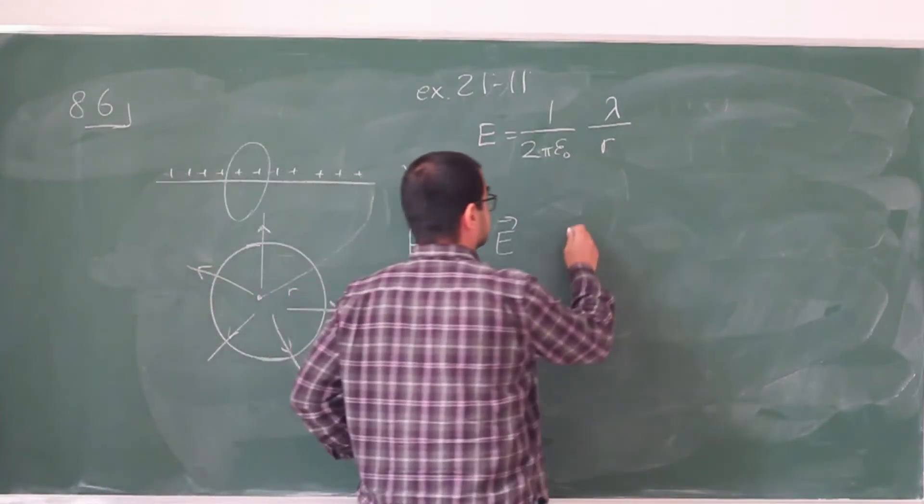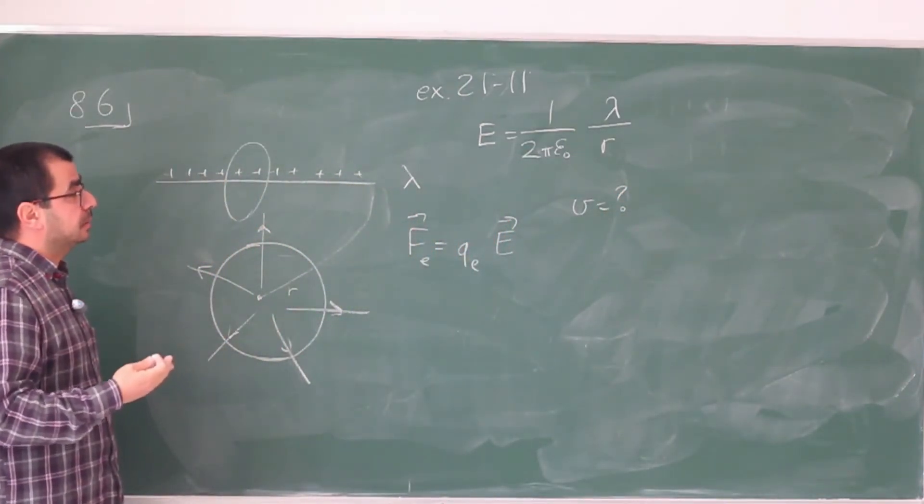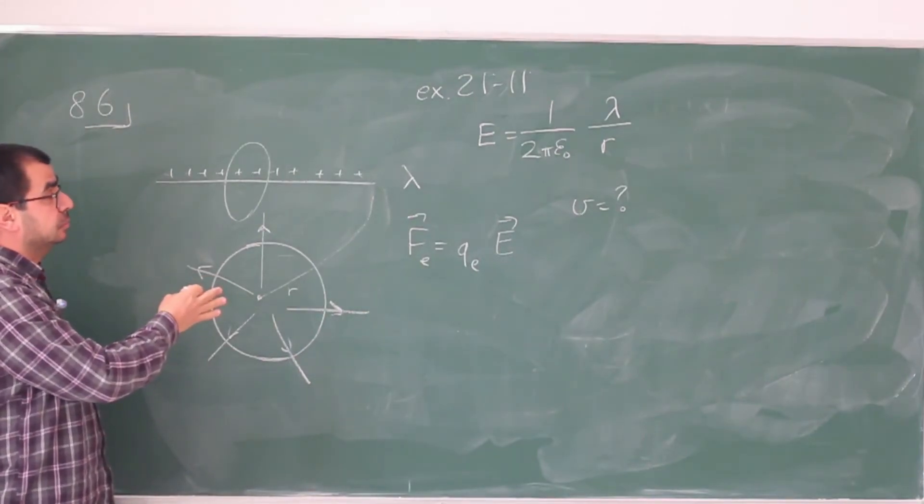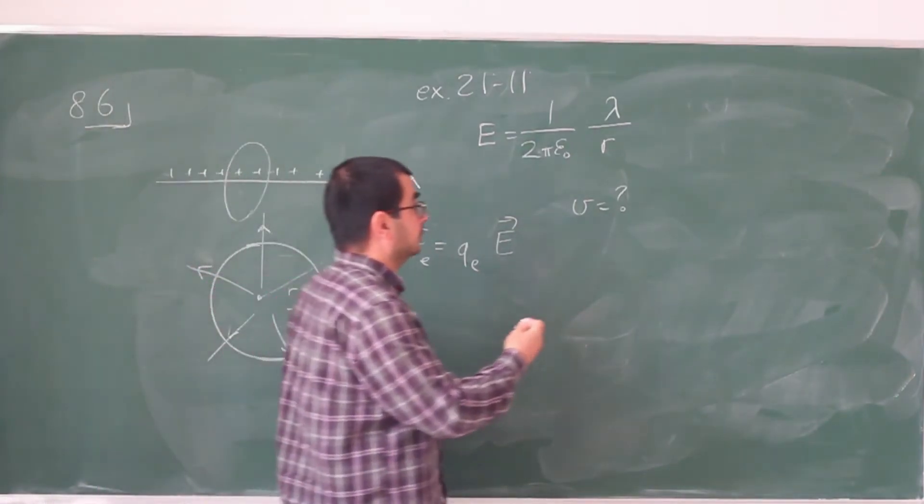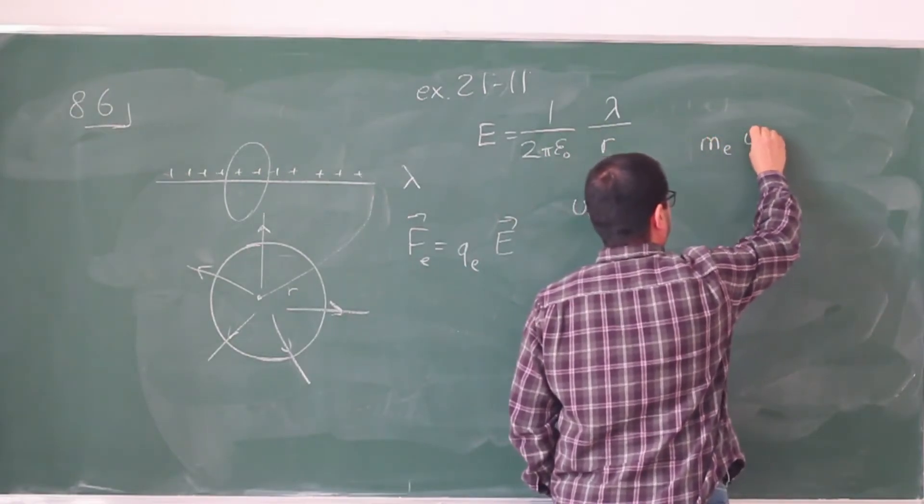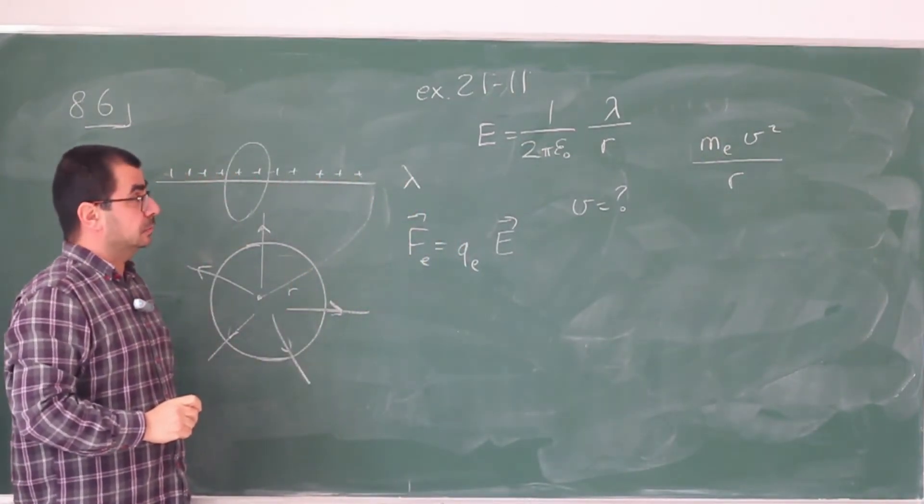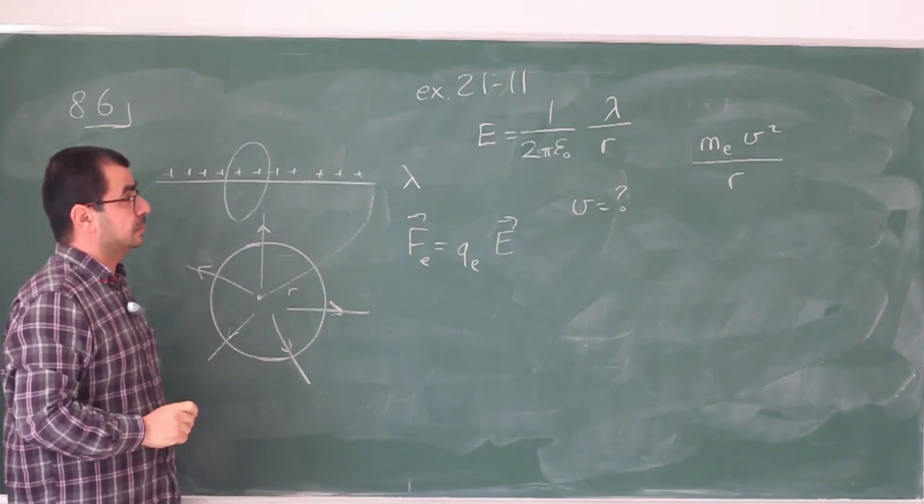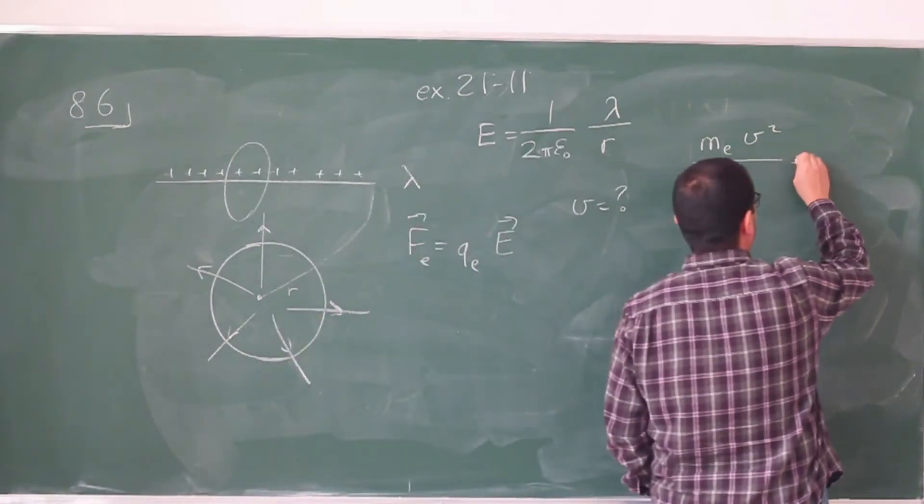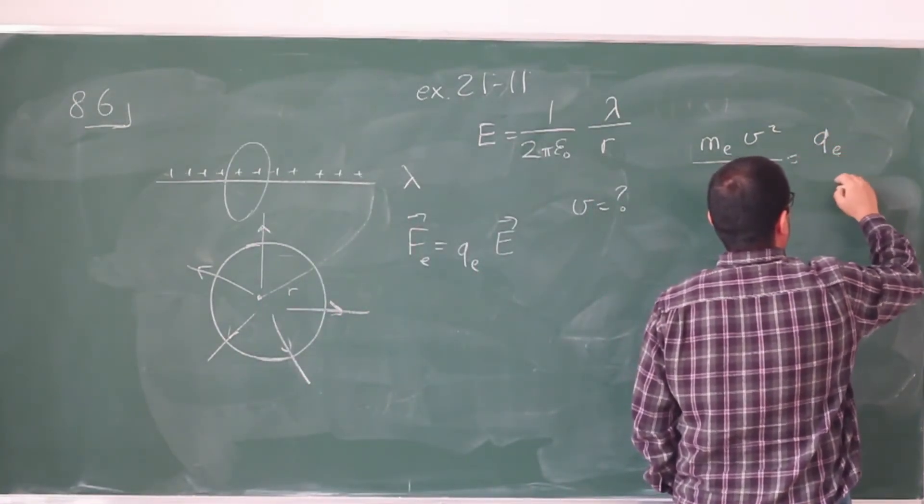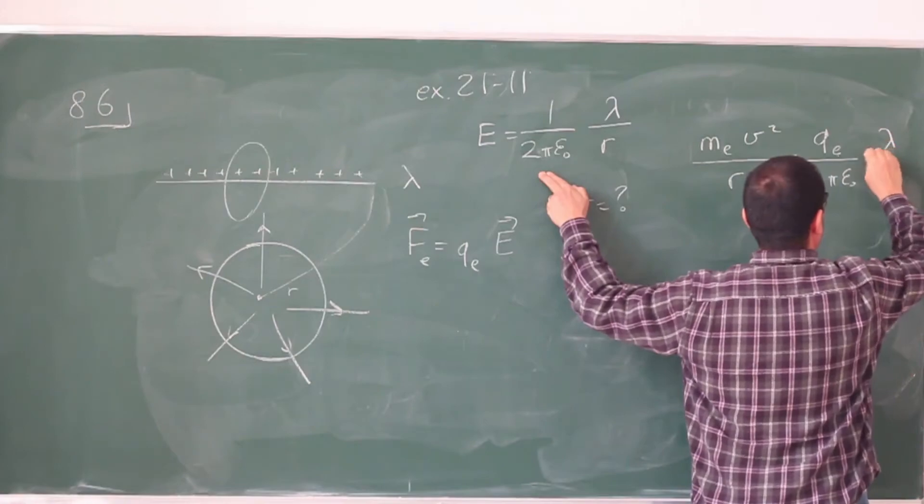And they're asking us in part B, what is the speed of the electron? And we can calculate the speed by recognizing this electrostatic force to be the centripetal force for the motion of the electron. Right? So it's going around in a circular motion. So centripetal force must be a mass of the electron times V square over r, whatever speed it's going around. And this is going to be equal to the charge of the electron times the electric field, which